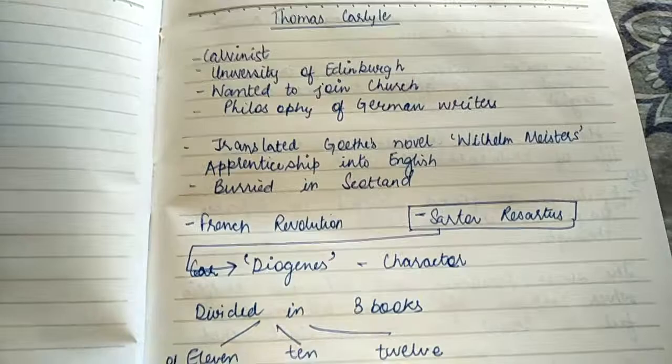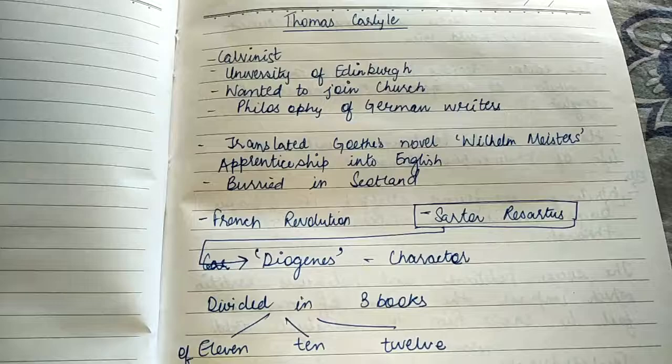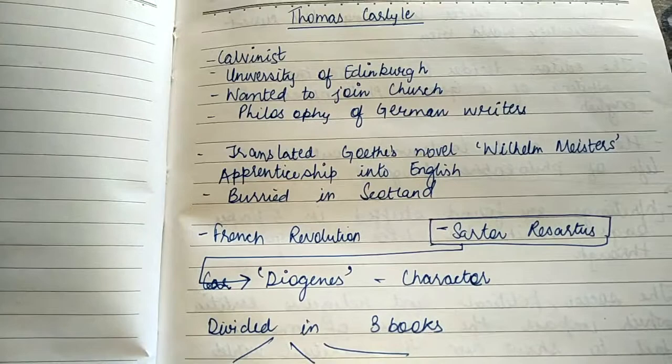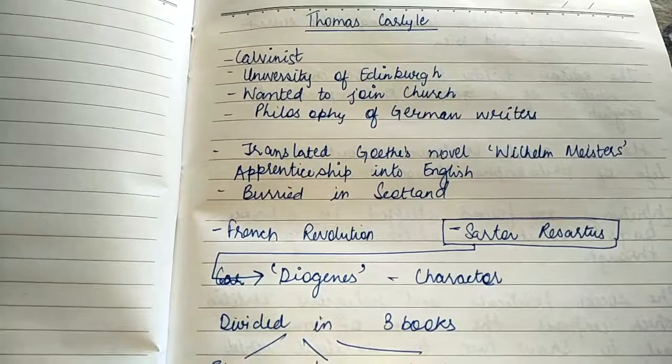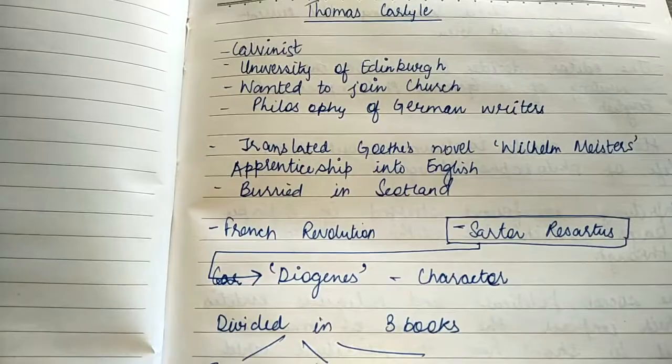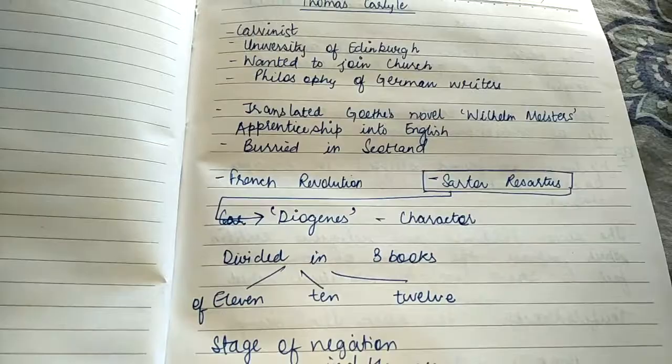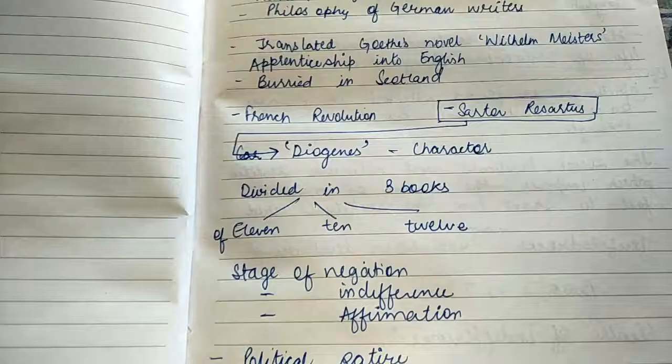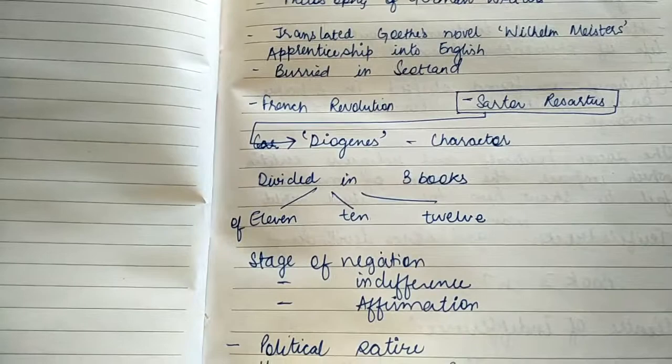The very first famous work before Sartor Resartus is the translation of Goethe's novel Wilhelm Meister's. He also did apprenticeship in English, and when he died he was buried in Scotland. There are two very famous books by him: the first is The French Revolution and the second is Sartor Resartus, which we will talk about today.